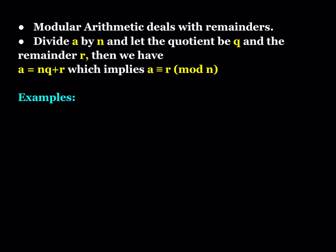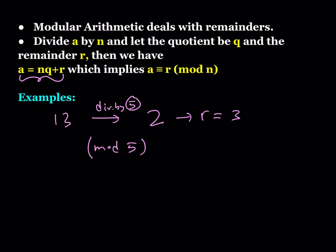Modular arithmetic deals with remainders. If you take a positive integer a and divide it by n, with quotient q and remainder r, then from the division algorithm we can write a is congruent to r mod n. For example, dividing 13 by 5 gives quotient 2 and remainder 3. So 13 is congruent to 3 mod 5. What matters here is the remainder, not the quotient.